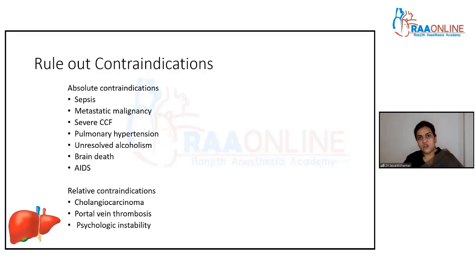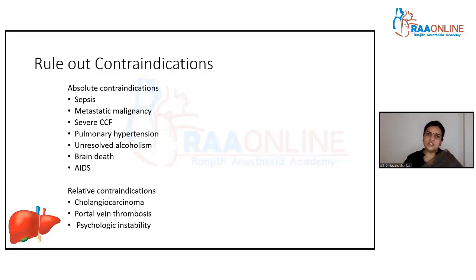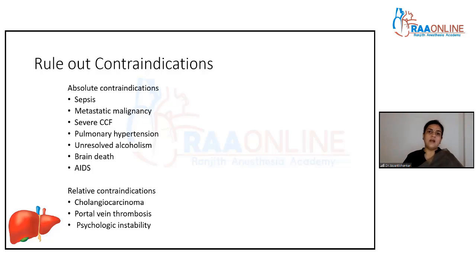Severe CCR is a contraindication because the transplant surgery itself has a lot of hemodynamic disturbances and the patient may not be able to withstand those. Portopulmonary hypertension or pulmonary hypertension per se is also contraindicated because the patient can develop overt right heart failure during transplant.